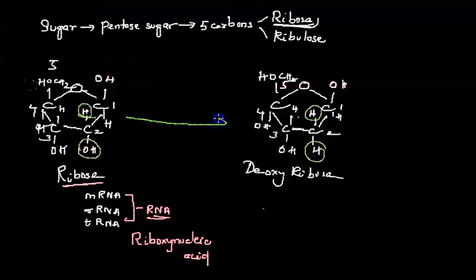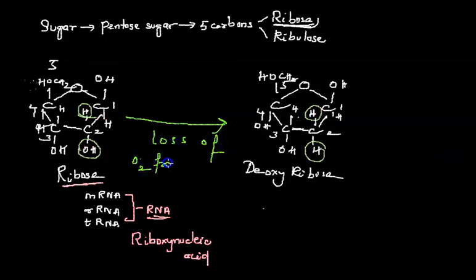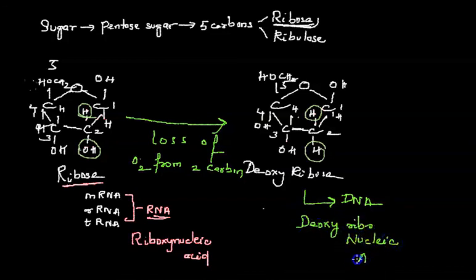You can tell it very clearly. The main difference is the loss of oxygen from the second carbon. So the second carbon, the oxygen group is lost. So hydroxyl became the hydrogen group and this sugar is called as the deoxyribose sugar. And this deoxyribose sugar is present in DNA. So both DNA and RNA have ribosugar but the structural difference is RNA has ribosugar whereas DNA has deoxyribose sugar and hence its name deoxyribonucleic acid.